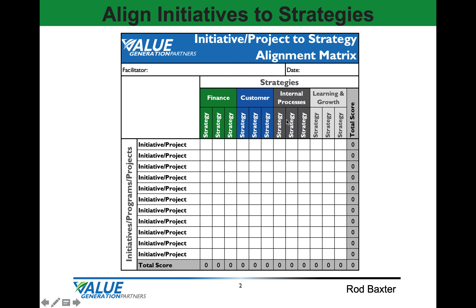We'll replace the word 'strategy' in this template with the actual strategic goals and objectives. We'll then list the prioritized initiatives and projects down the left vertical axis of the alignment matrix.